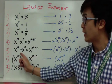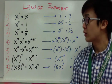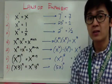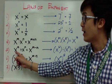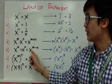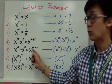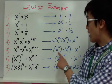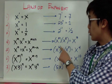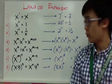In dividing expressions with exponents, you subtract the numerator's exponent by the denominator's exponent. So if I have x to the m divided by x to the n, it is simply x raised to m minus n. So if I have x to the sixth divided by x squared, you subtract 6 and 2, giving you x to the fourth.